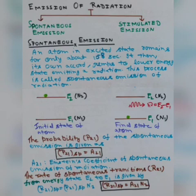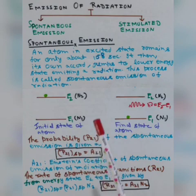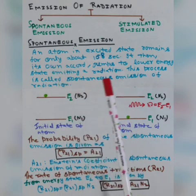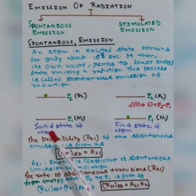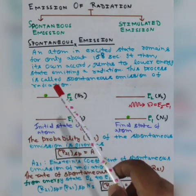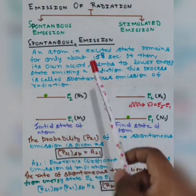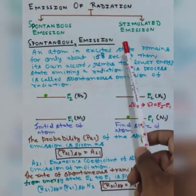In this slide, we will discuss the emission of radiation. There are two types of emission: one is known as spontaneous emission, and the other is known as stimulated emission. When an atom absorbs a photon, the atom will go to the excited state, and it will then return to the ground state with the help of either spontaneous emission or stimulated emission.